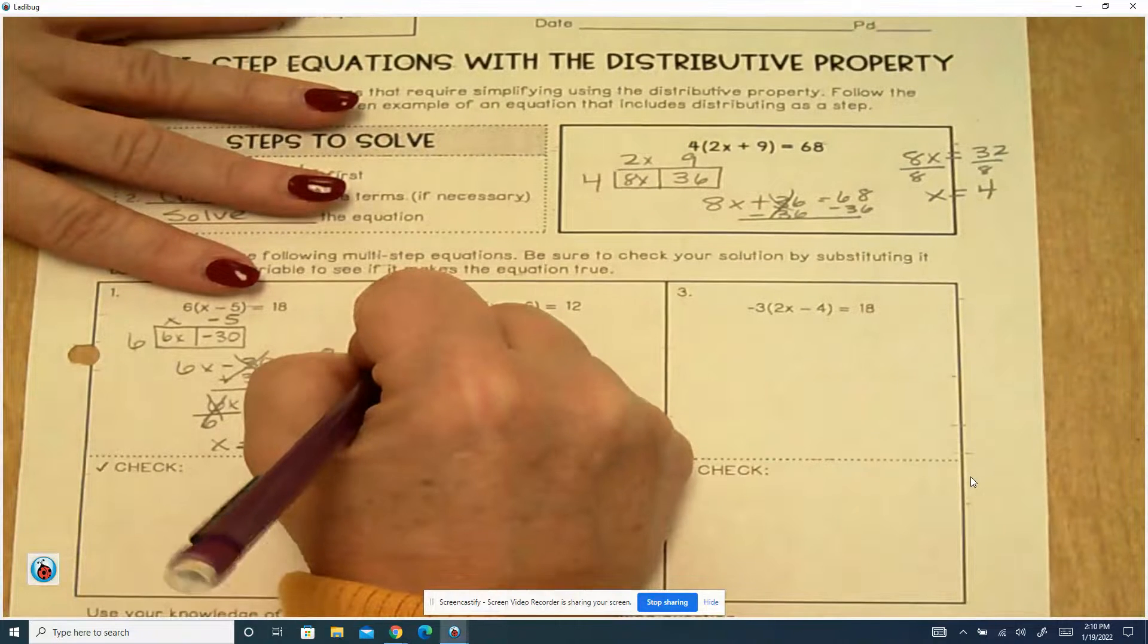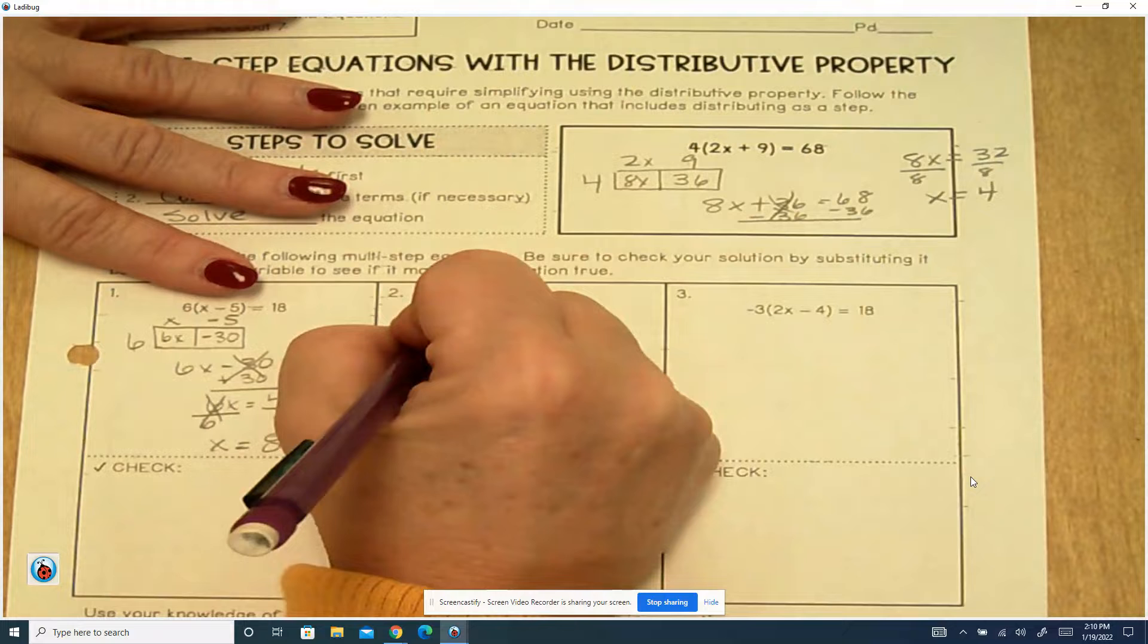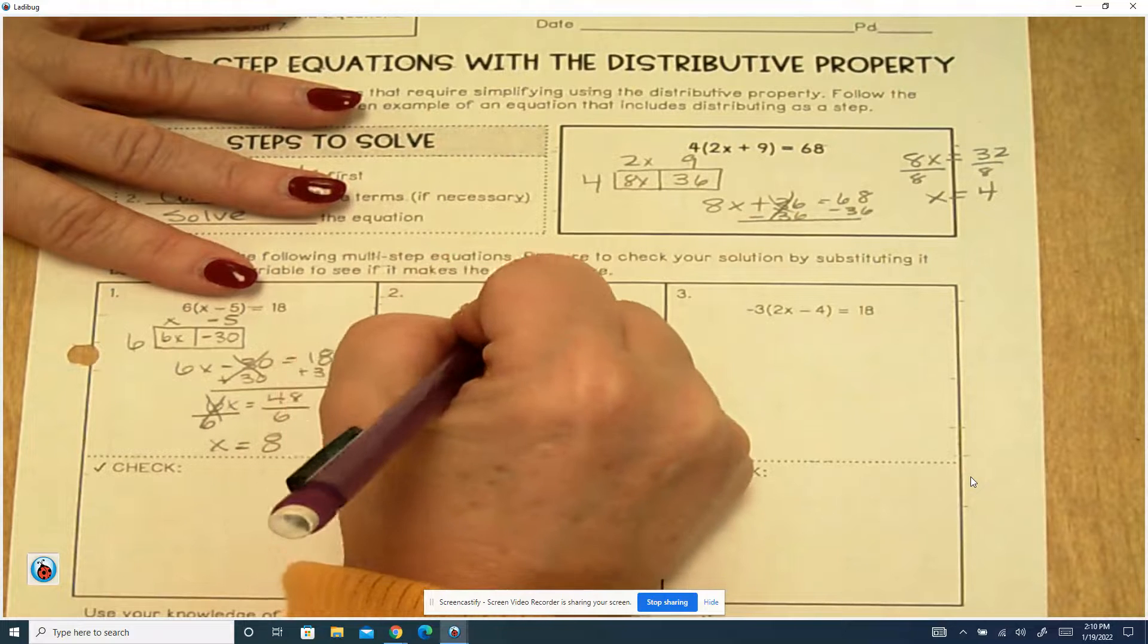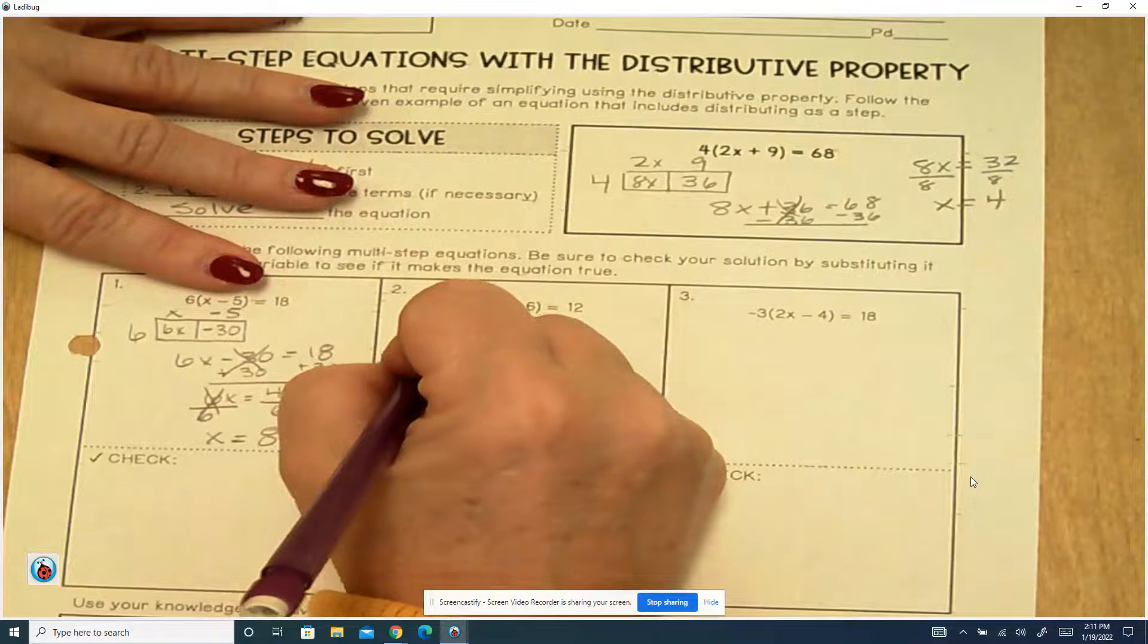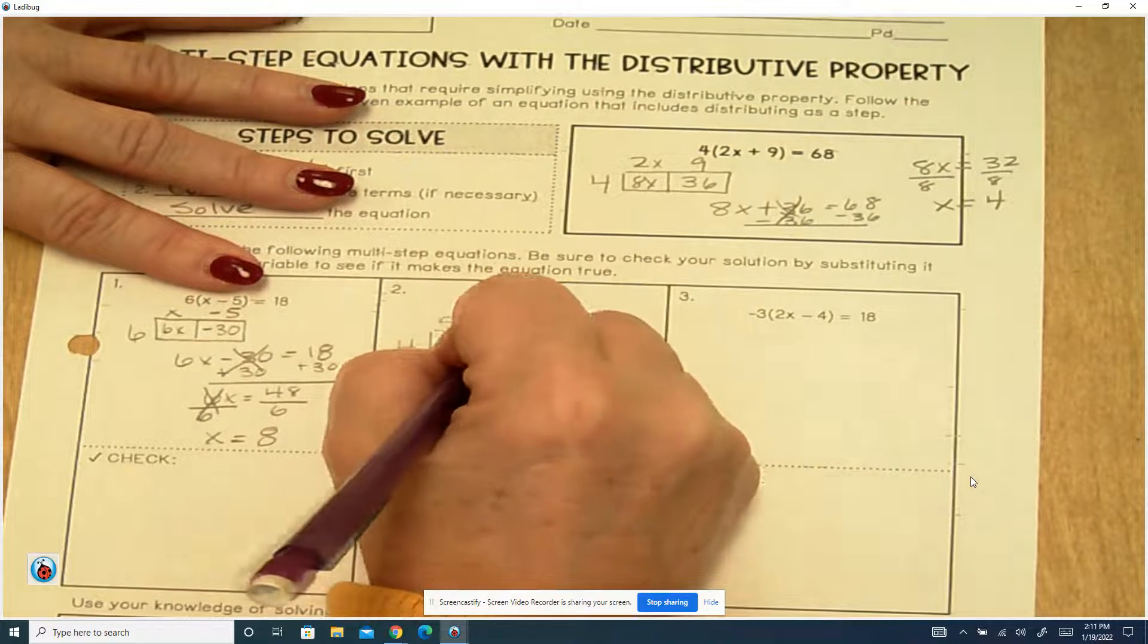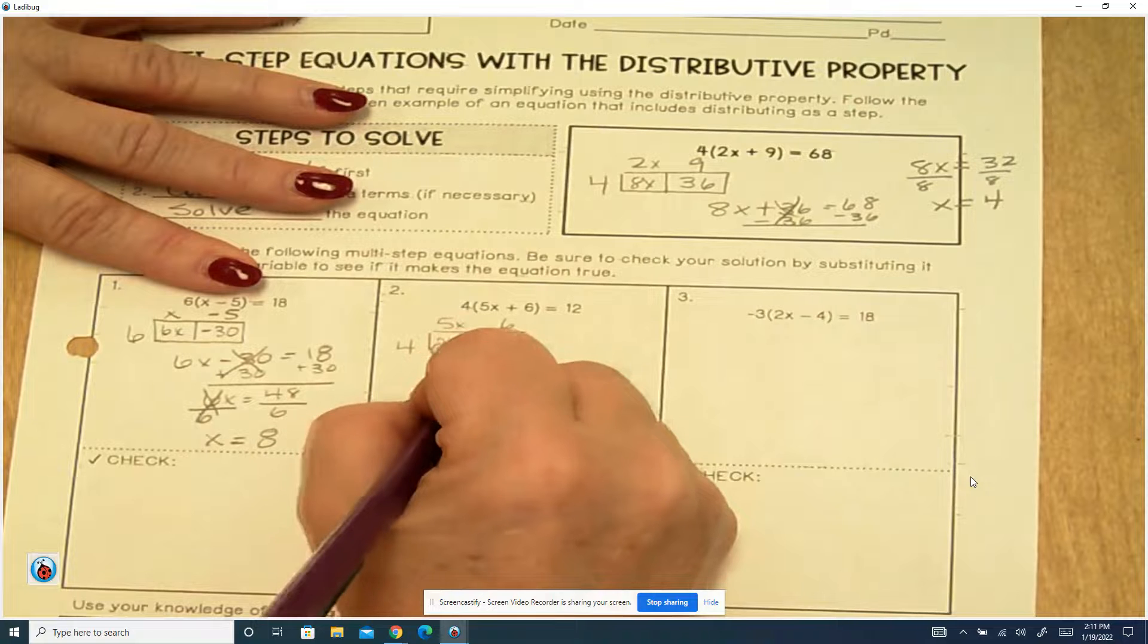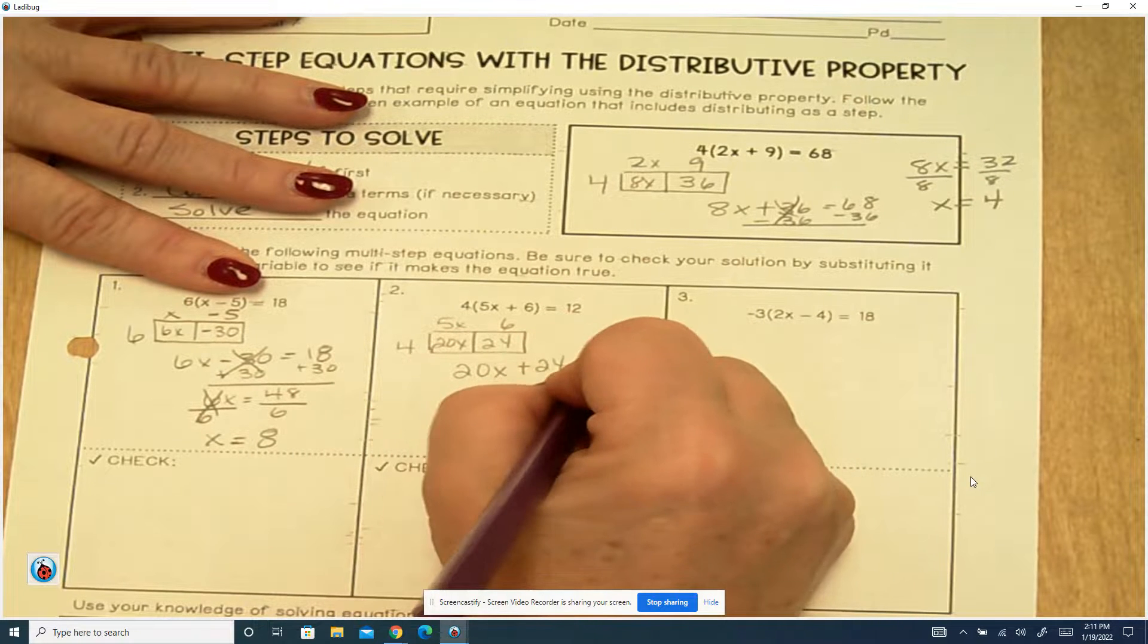So here we've got 4, two terms, two boxes, 5x and 6, positive 6. 4 times 5x is 20x, and 4 times 6 is 24. So 20x plus 24 equals 12.